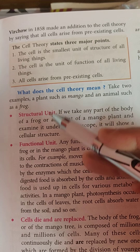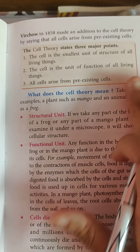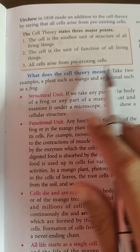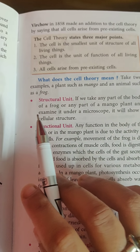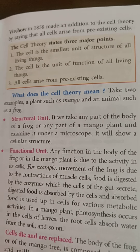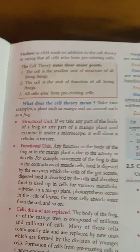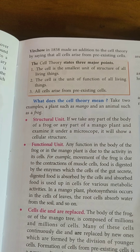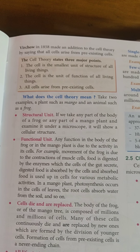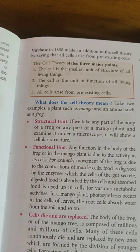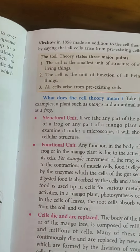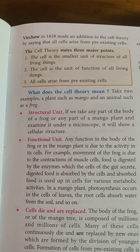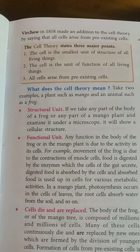If the question asks you to explain each point, then we move on. What does 'structural unit' mean? If we take any part of the body of a frog or part of a mango plant and examine it, it will show a cellular structure. This tells us that no matter what organism we are observing, at a microscopic level, at the basic level, there has to be a cell, and it is the structure of the cell that shapes the organism.